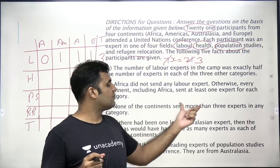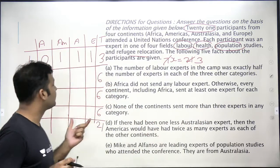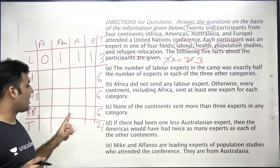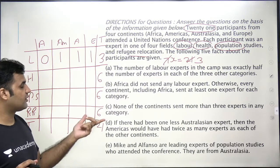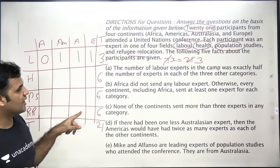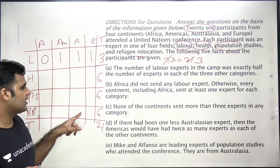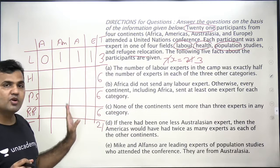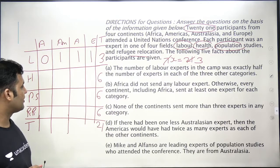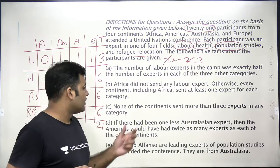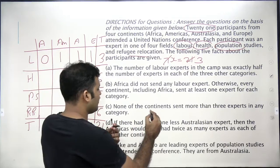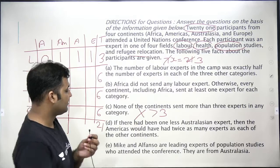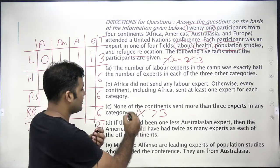Next clue: none of the continents sent more than 3 experts in any category. So the maximum value that can appear in any cell is 3. More than 3 is not possible — just note that constraint down.